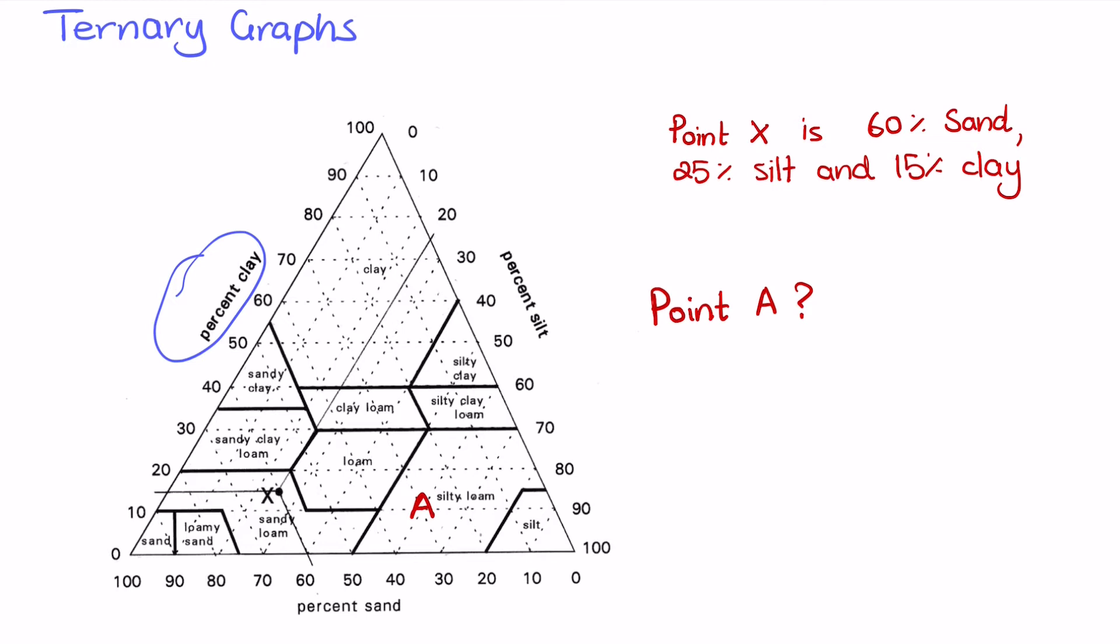So as I said earlier, it's best to draw out where the lines are going. So for the sand, this way. For the clay, it's going horizontally. And for the silt, it's going the downwards diagonal. So for point A, if we want to find the percentage of sand, it would be going upwards in that diagonal there. So we could say that's 30% sand. We can also see on the graph that with respect to clay, it is 10% clay.